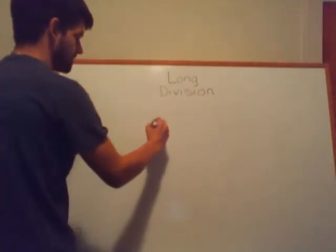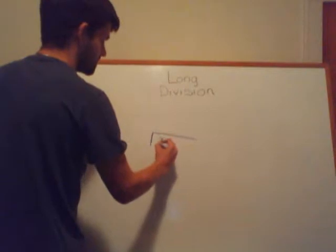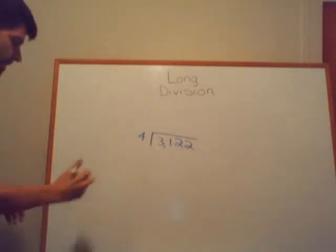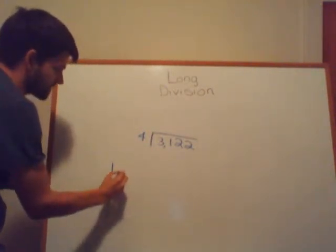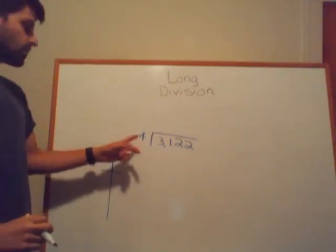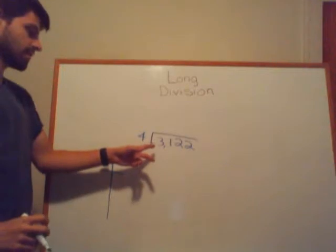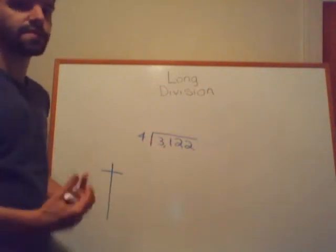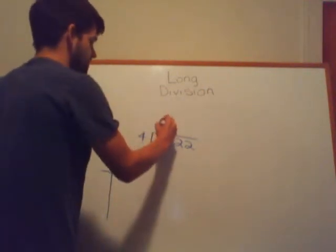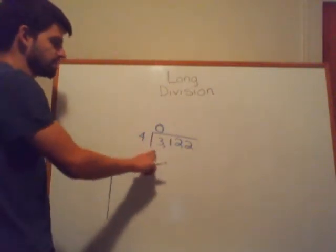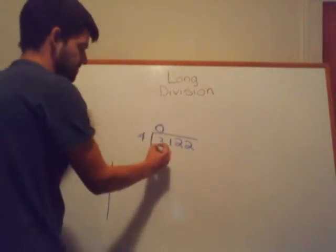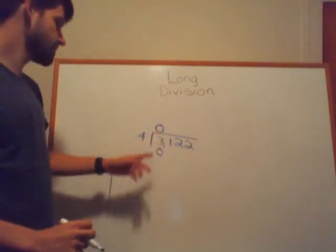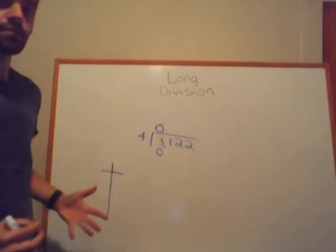For my last example, I have 3,122 divided by 4. Unlike the other ones, the first thing you'll notice is that 4 is greater than 3, so it can't go in. The only thing we can say about 4 going into 3 is it goes in 0 times. So 4×0=0. This 0 is really a placeholder, because 4 can't go into 3 any times without going over. So 3 minus 0 is 3.